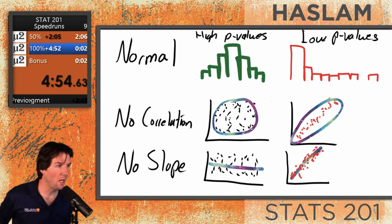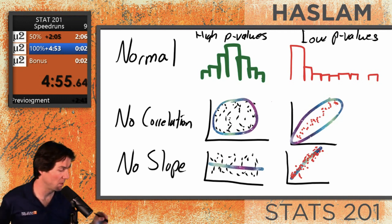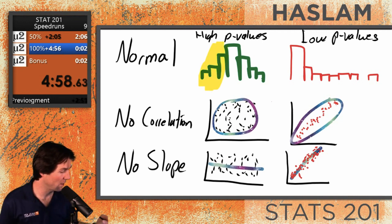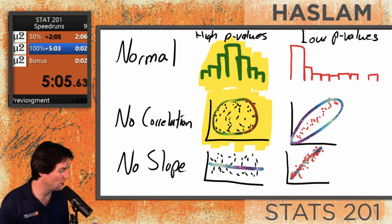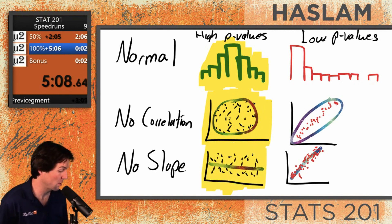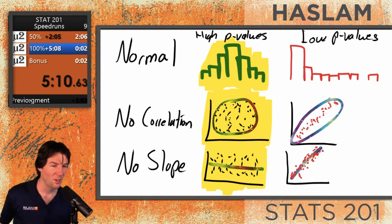Think about what a high p-value is. If the null is true, it's likely that we'd see a normal curve like this. If the null is true, it's likely that we'd see no correlation like this. If the null is true, it's likely that we'd see no slope — because the null says there's no slope. So that's likely to see.